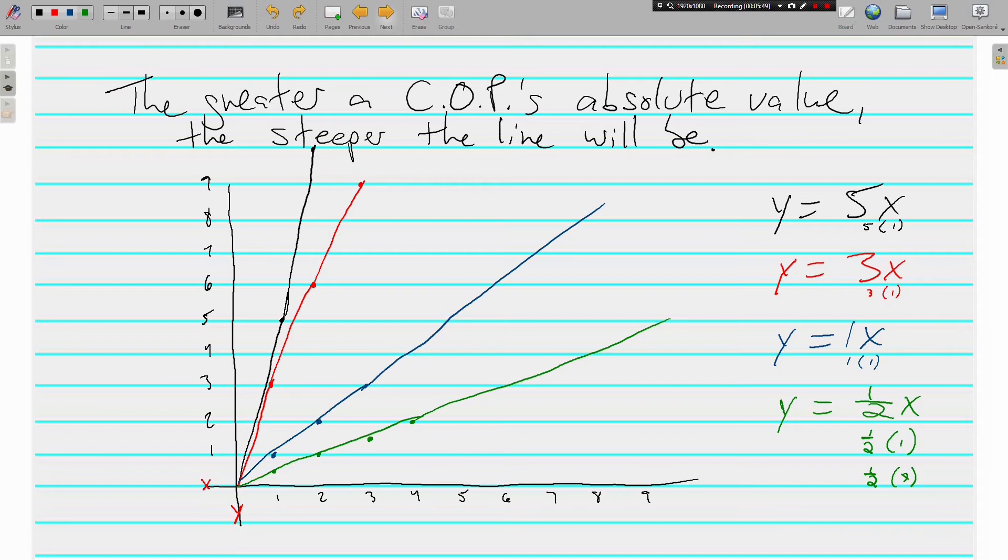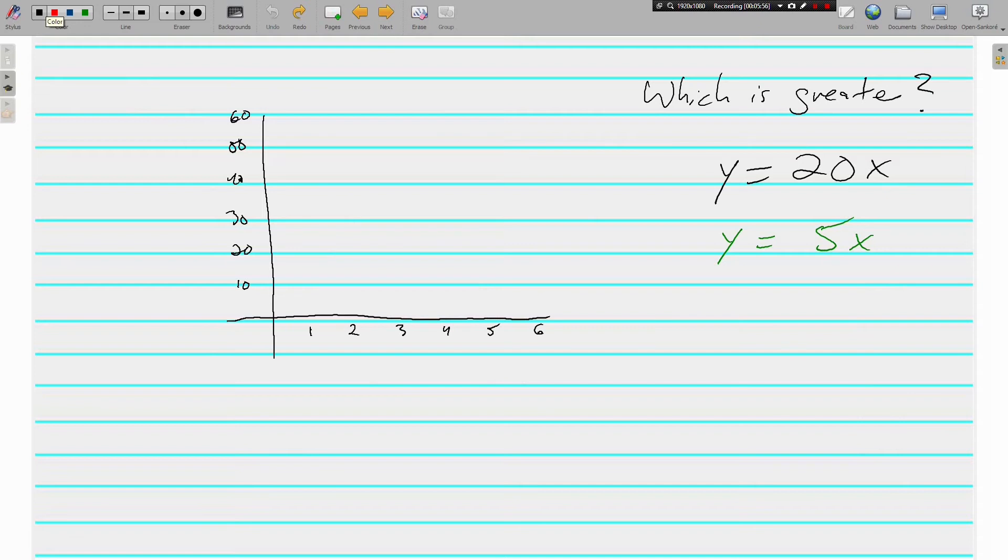Let's look at this next thing here. We have another graph. I'll just ask a simple question. Which one is greater? Y equals 20x, or y equals 5x? From what you know already, that one's greater. 20 is greater than 5, so it shows the greater constant of proportionality. But let's prove it. If I put 1 in for x, then 20 times 1, that means my y would be 20. 2 would be 40. 3 would be 60. And there's my straight line, my proportional line.